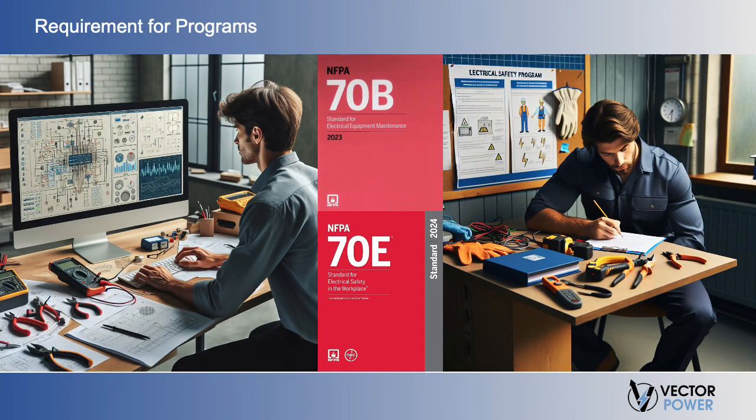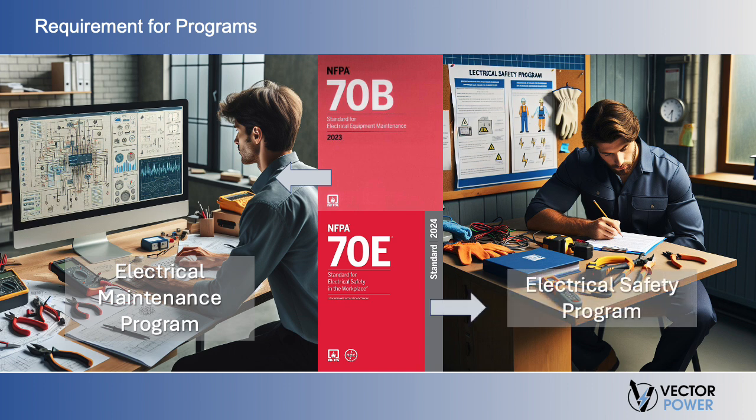A key aspect of both of these examples is that they both require the development of a program. In 70B, an electrical maintenance program is required, and in 70E, an electrical safety program is required.